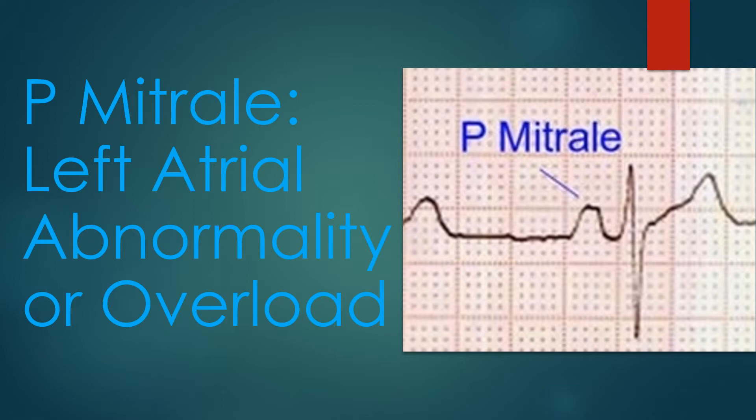The second component of the normal P wave is contributed by left atrial activation. This activation spreads leftward from the sinus node through Bachmann's bundle and the interatrial conduction pathway.